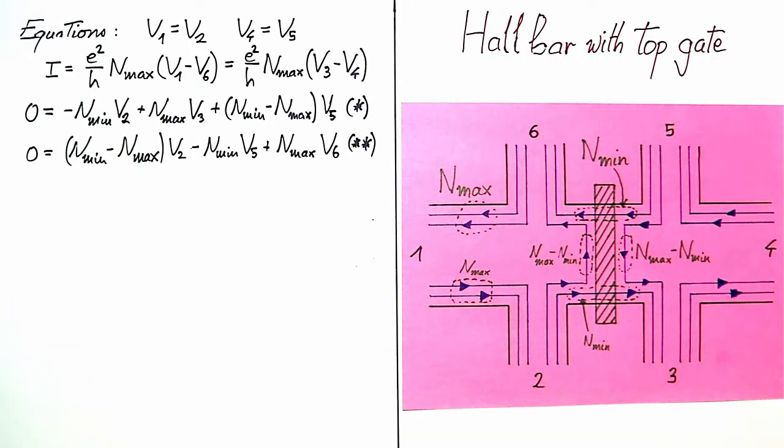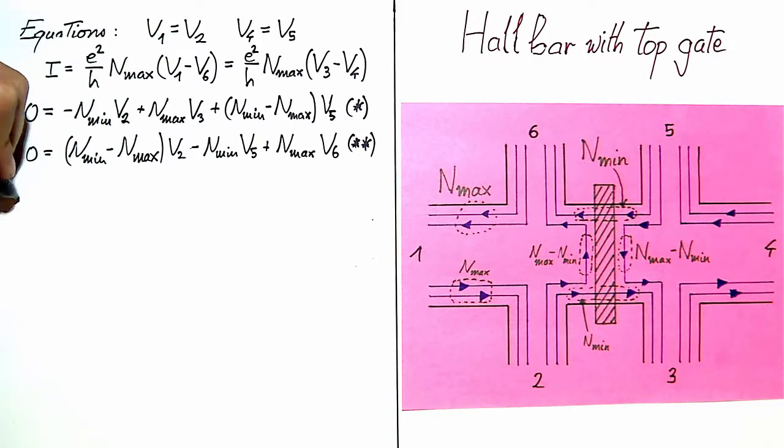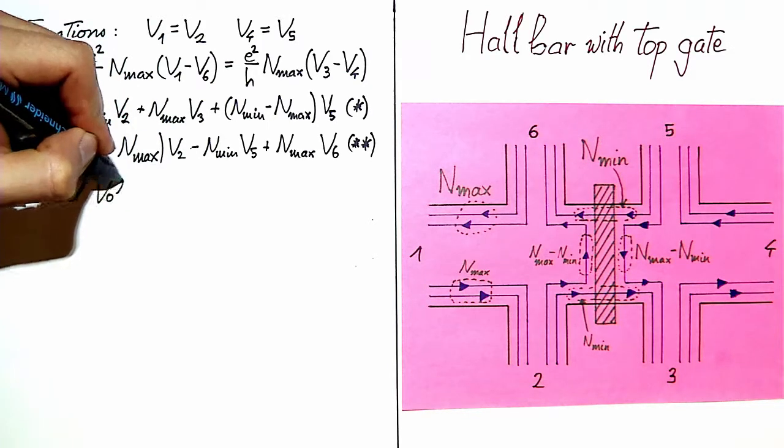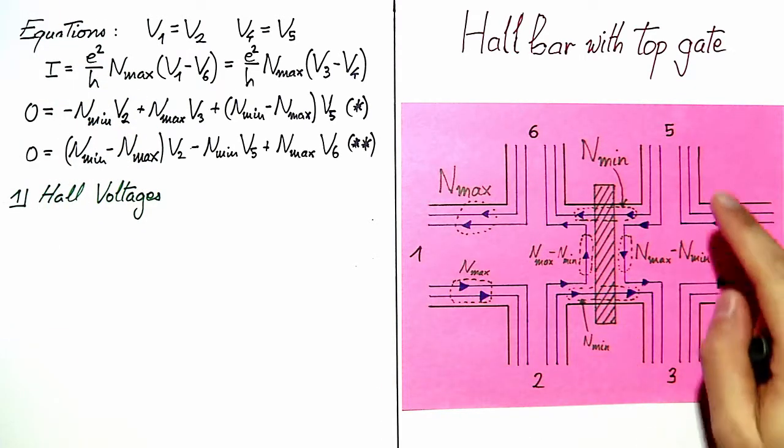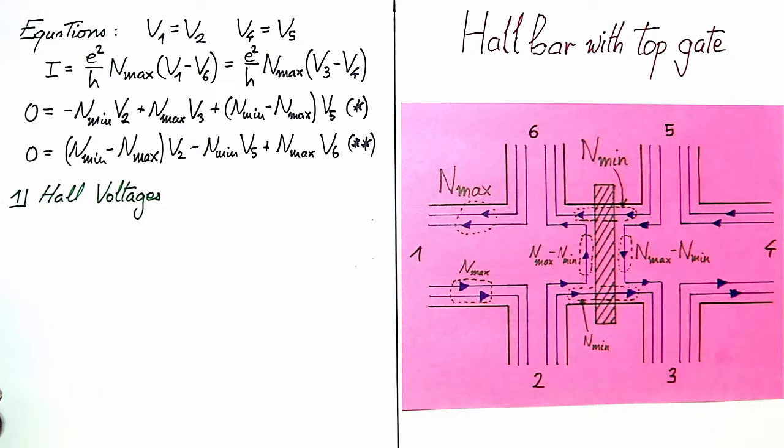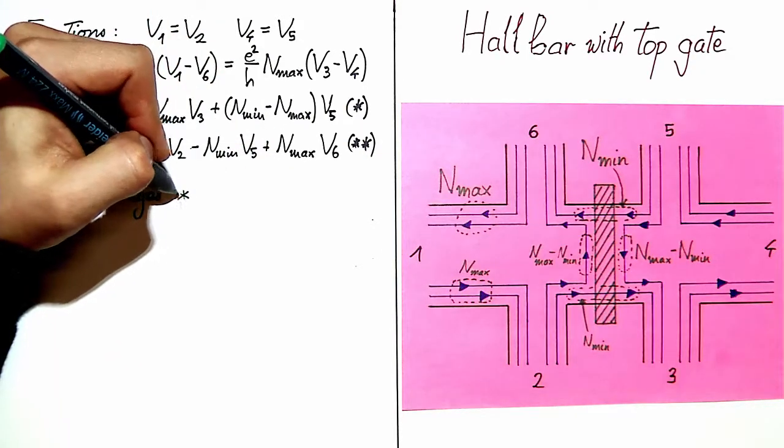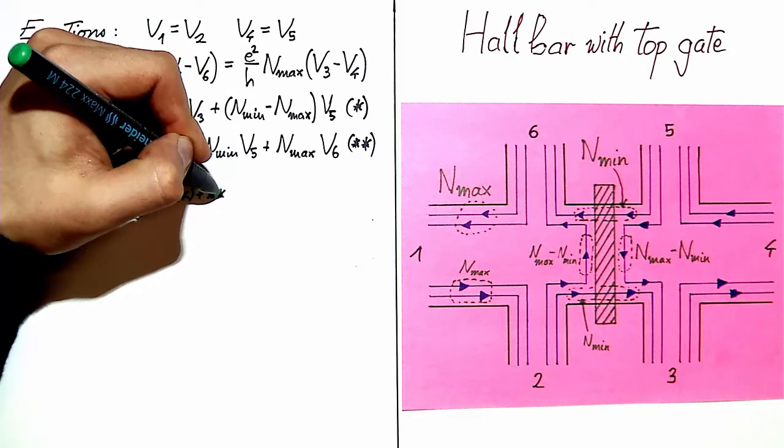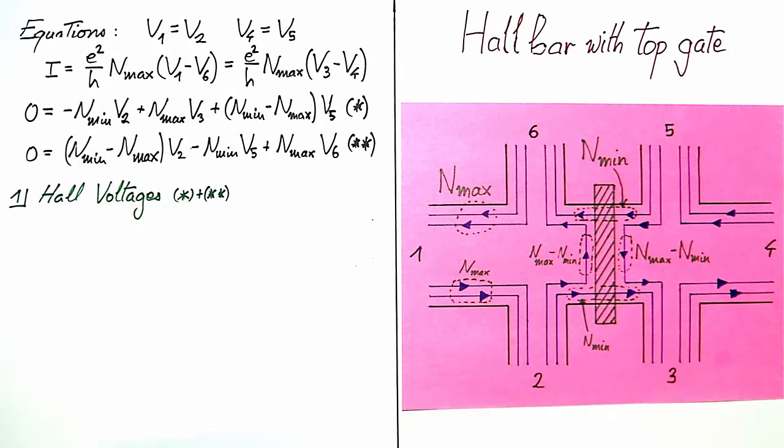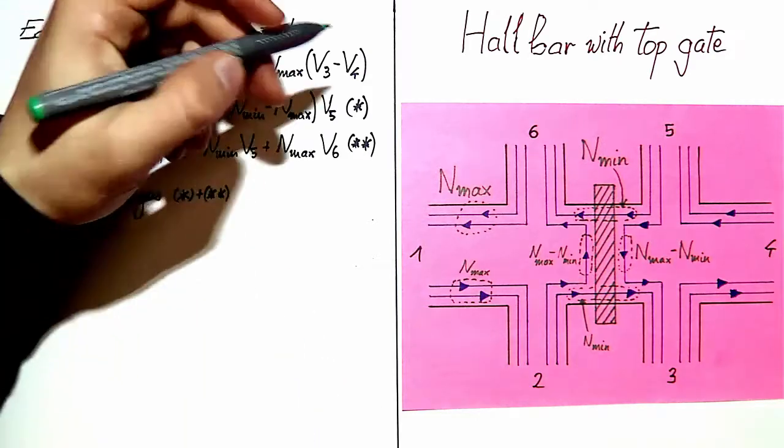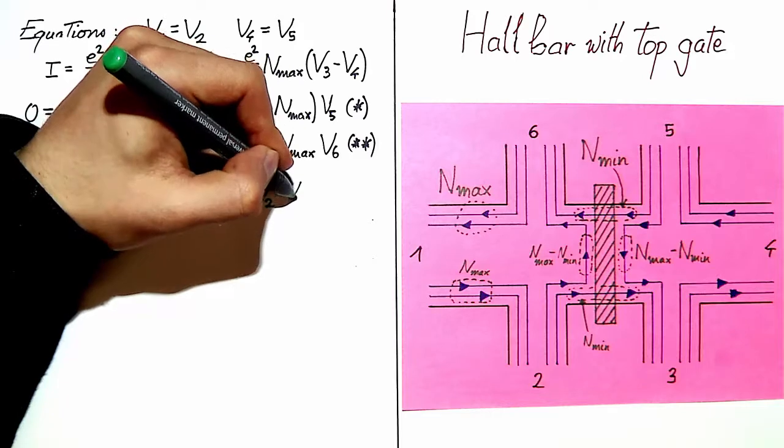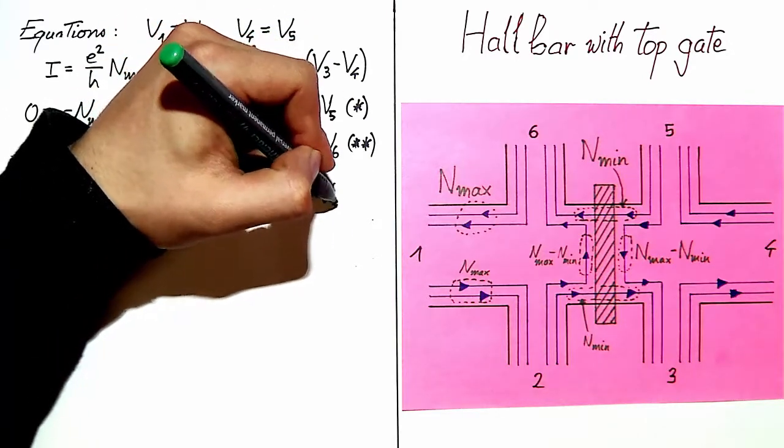Now the last one we need is what we get from this row where we read that what sums up to 0 is N_min minus N_max times V2 minus N_min times V5 plus N_max times V6. And I call this double star. Let us now try to calculate the interesting voltages in an efficient way. We start with the Hall voltages. So we have V2 minus V6 to consider and V3 minus V5.